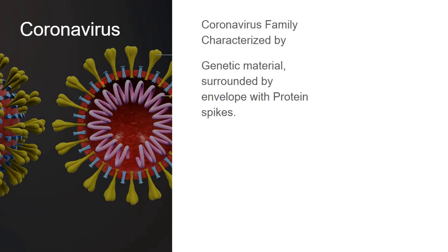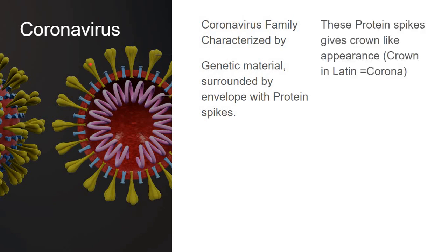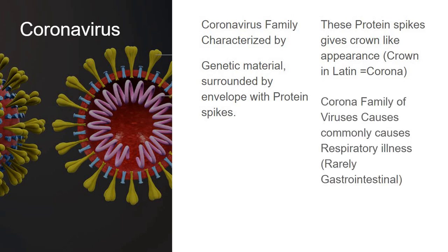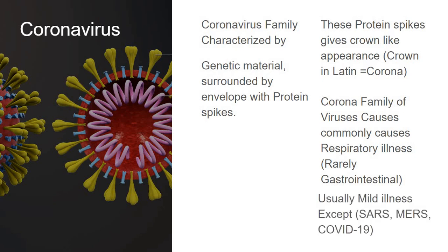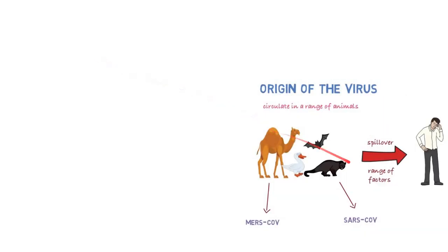So let us see about the coronavirus family. In the coronavirus family, the genetic material is usually in the center, surrounded by an envelope containing protein spikes. These spikes look like a crown — in Latin, 'corona' means crown — that's how the name coronavirus is derived. The corona family of viruses causes mostly respiratory illness, rarely gastrointestinal illness. Mostly the infections will be mild and not serious, except SARS, MERS, and the recent pandemic COVID-19.